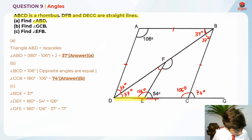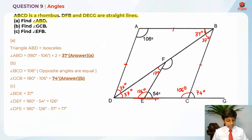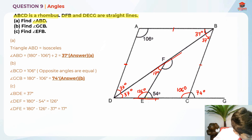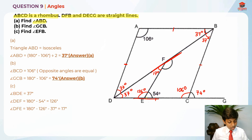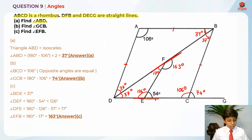So that gives us 17 degrees. We also know that line DFB is a straight line, so in order to find angle EFB, we just take 180 degrees minus 17 degrees, which gives us 163 degrees as the answer.